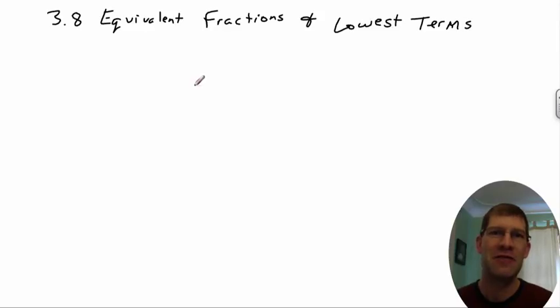Hi, today I'm doing section 8 of chapter 3, it's equivalent fractions and lowest terms. Some of the stuff's probably going to be review from things that you knew before, in which case if you know it clearly, you don't need to write it down. But I'm just going to talk a little bit about 3-8 equivalent fractions and lowest terms.